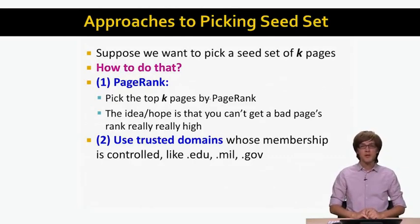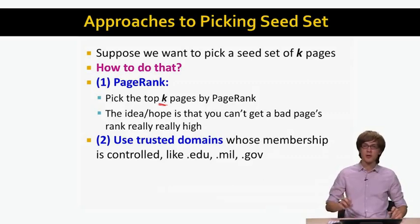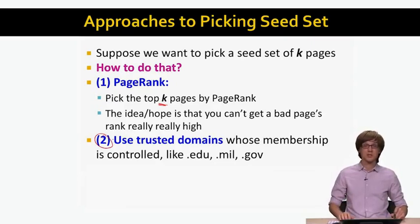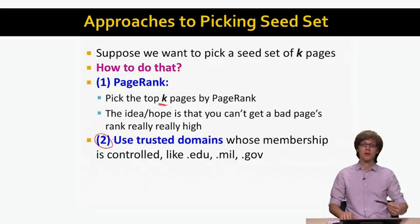One idea is to select K pages according to PageRank, hoping the top small fraction of pages are truly important. Another idea is to use trusted domains whose membership is controlled by a trusted organization — for example, .edu, .mil, or .gov domains. These are domains that not just anyone can register, so all pages in these domains are trusted to be good, non-spammy pages. One way to create a trusted set is simply to take all web pages at these domains.